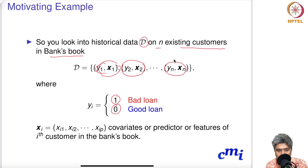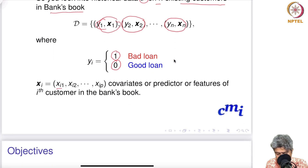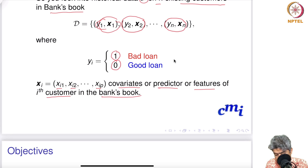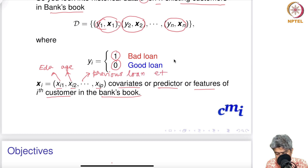xi = (xi1, xi2, ..., xip) are the covariates or predictors — the features of the i-th customer in the bank's book. Features could include education, age, whether the customer has any previous loan, and so on. All this information is what the bank asks for.